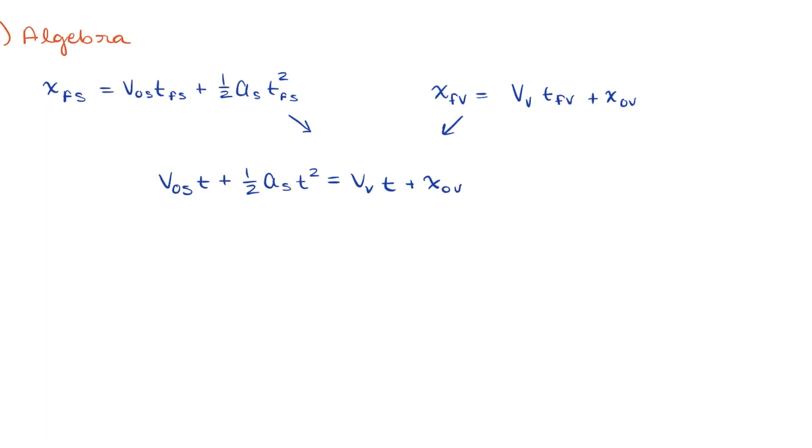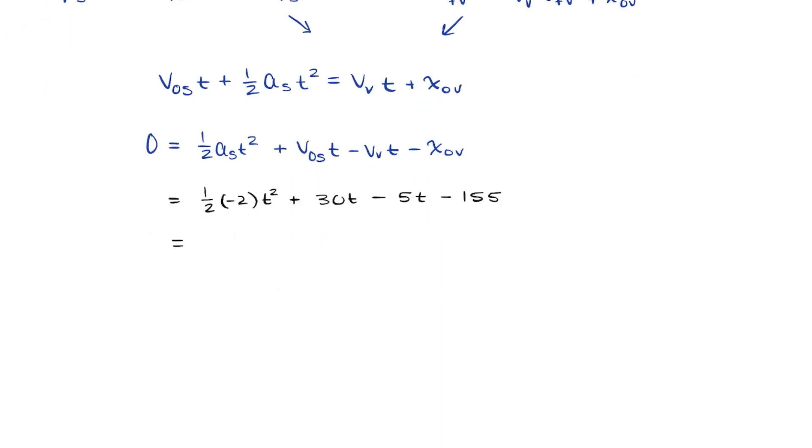Since there's a t-square in this, we probably need to factor, so let's add all of the terms on one side. Now we can start plugging in values. 1 half times negative 2 times t squared plus 30t minus 5t minus 155. We can simplify this a bit to put it in the format of ax-squared plus bx plus c.